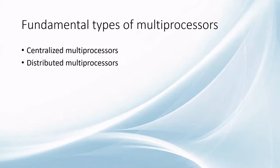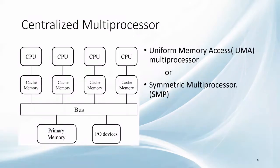Fundamentally, the multiple processors can be of two types. They can be centrally managed or can work in a distributed environment. We will start with a centralized multiprocessor concept, which is a straightforward extension of a uniprocessor system. The CPUs are connected through a bus and share a common memory. This architecture is also called Uniform Memory Access multiprocessor or a symmetric multiprocessor.